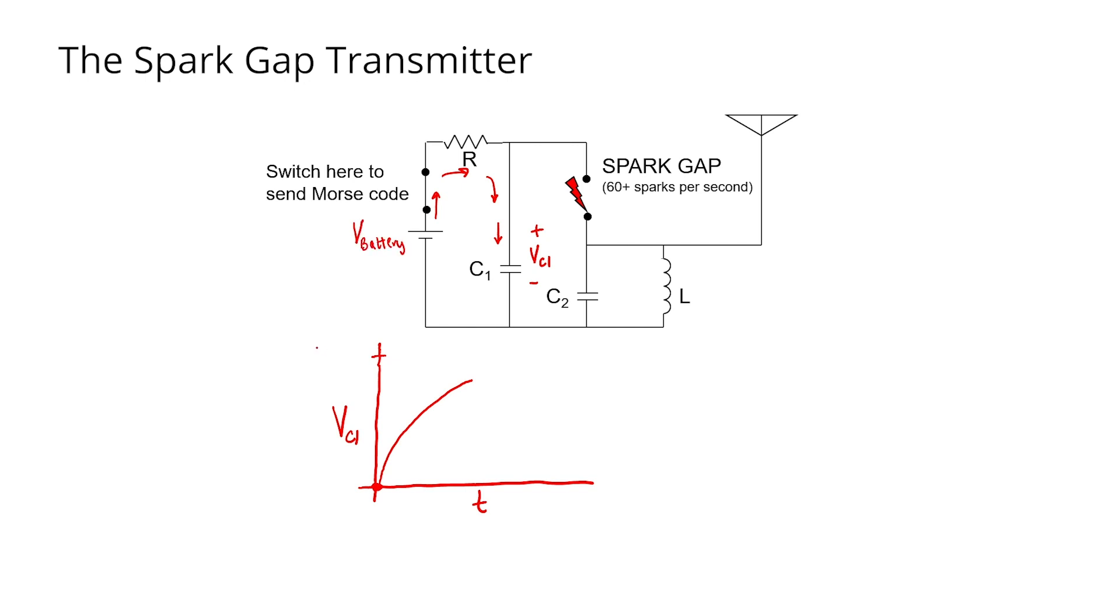as capacitor C1 starts to charge, the voltage would approach the battery voltage. And if we didn't have any spark gap in the circuit, we would get infinitely close to the battery voltage in the ideal case.